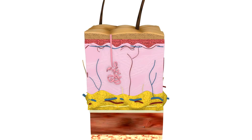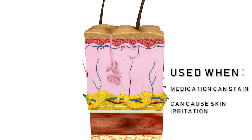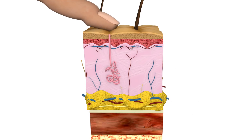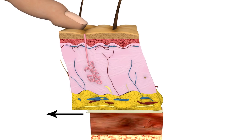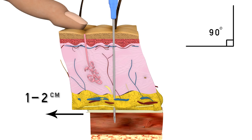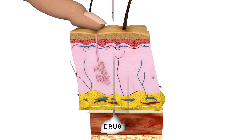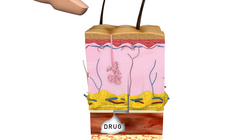The Z-track route is used when the medication can stain or cause skin irritation. For the Z-track technique, the skin is pulled to one side, which moves the subcutaneous tissue approximately one to two centimeters. The needle is inserted at a 90 degree angle, and after aspiration the medication is inserted into the muscle, whereupon the nurse waits 10 seconds. This allows the medication to disperse within the muscle. After the time lapse, the skin is released as the needle is withdrawn, ensuring that the skin closes over the injection site, preventing leakage onto the skin.